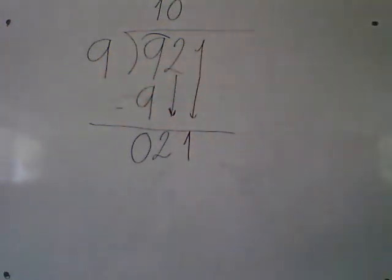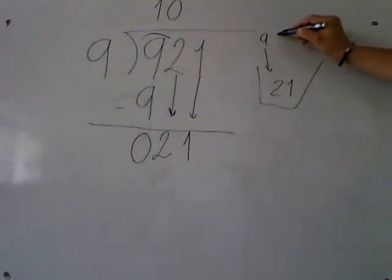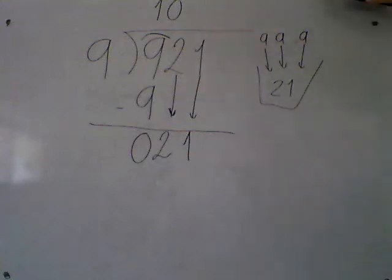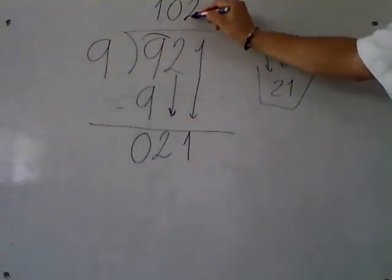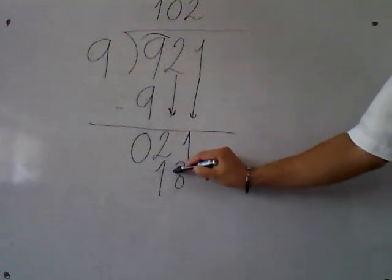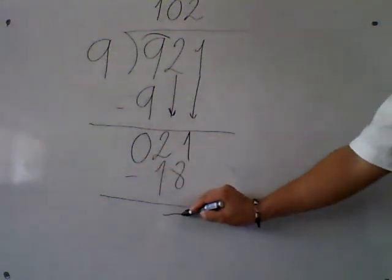Does 9 fit in 21? Yes. How many times? If you add 1 nine, you have 9. If you add 2 nines, you have 18. But 3 nines would be 27 — not possible, because the capacity is only 21. So how many 9s could you put inside? 2 nines. It fits 2 times. Multiplication: 2 times 9 is 18. Write the answer. Subtraction: 21 minus 18 is 3.